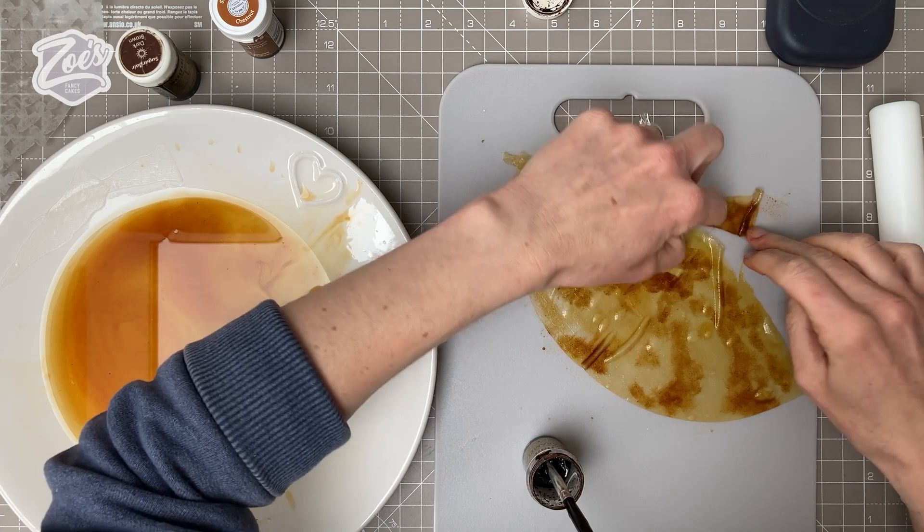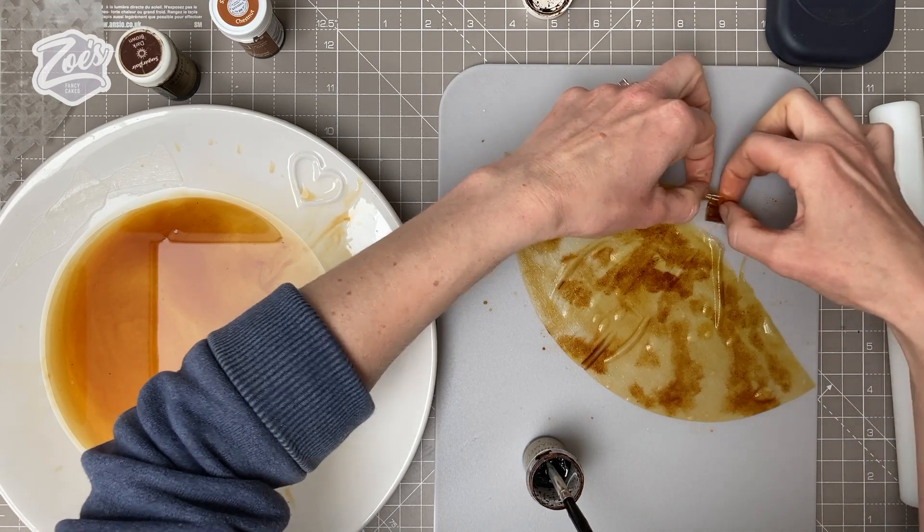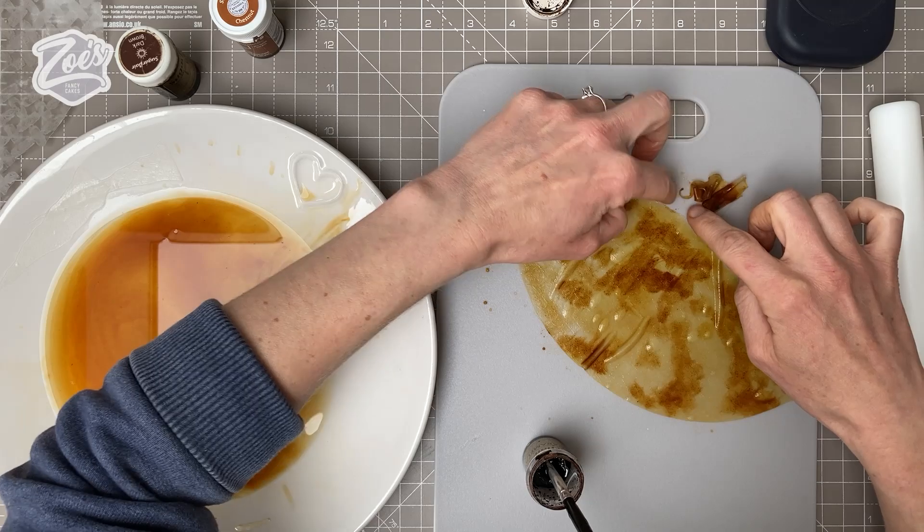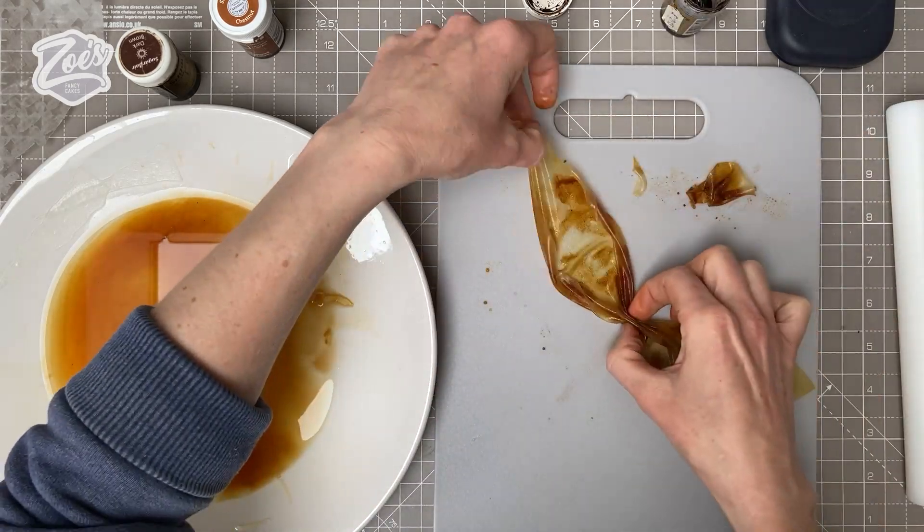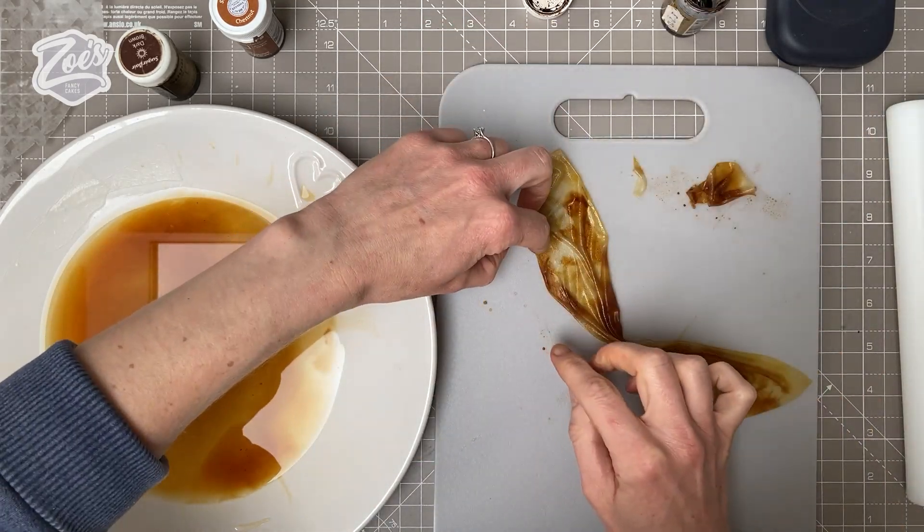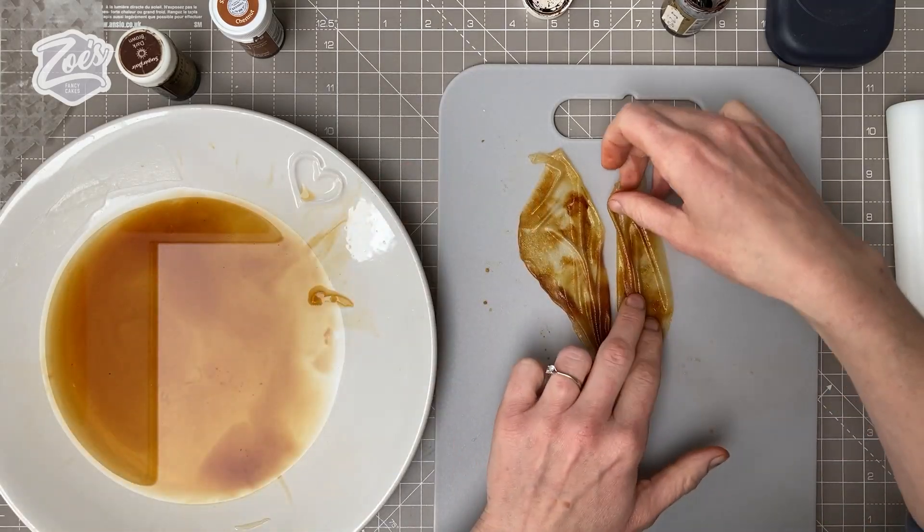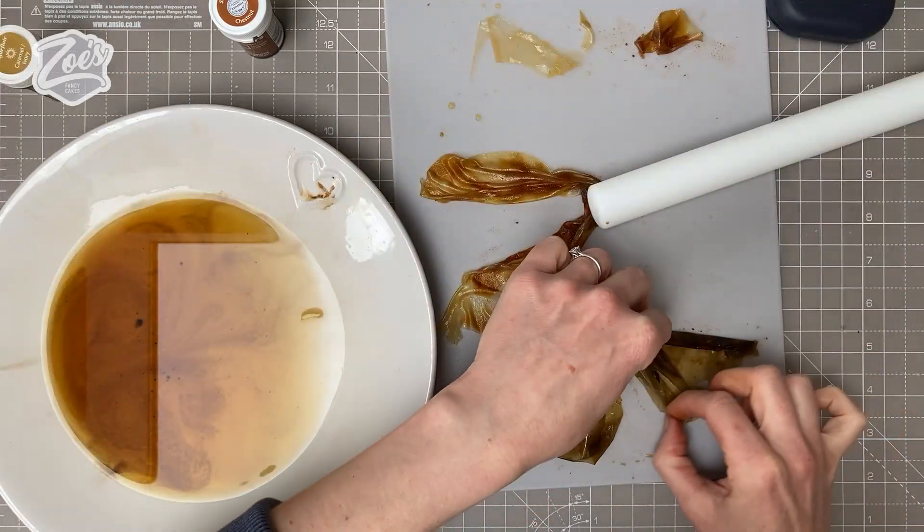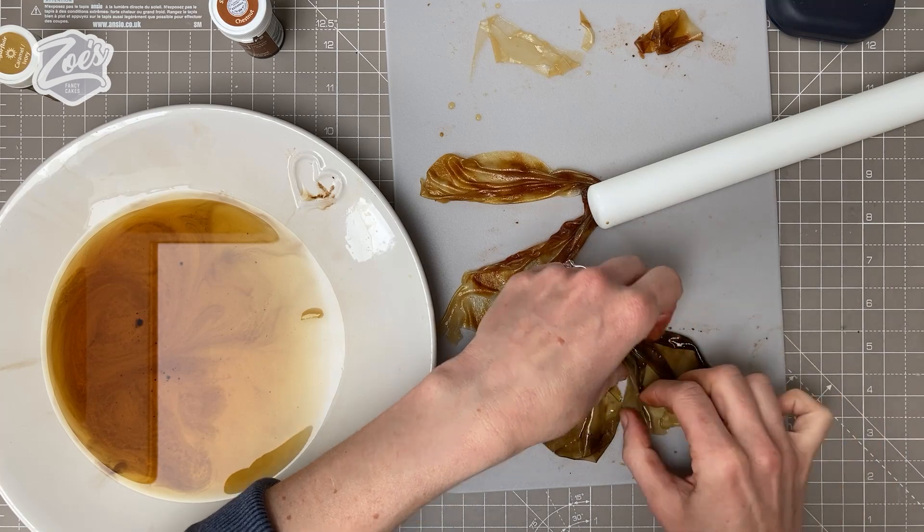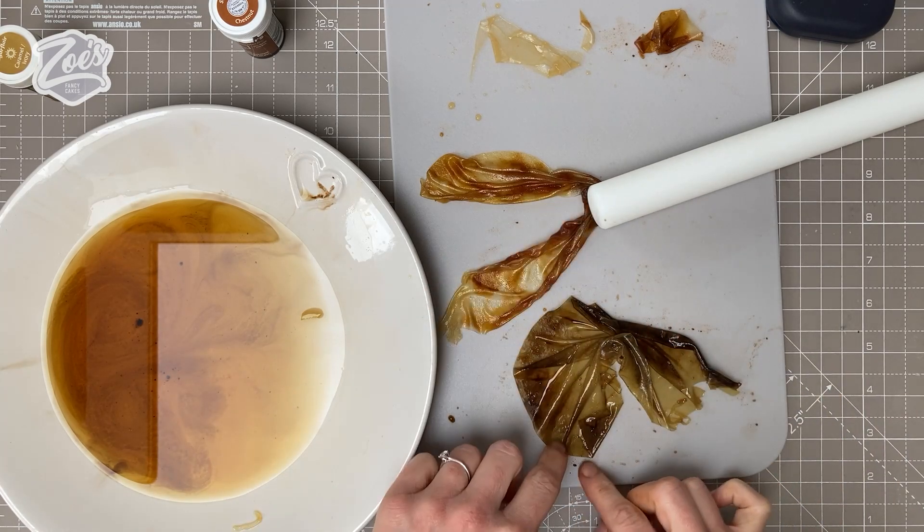Pull it into different shapes you think will look nice for a mermaid tail. It might change shape slightly when it's drying as well. You can use a few different pieces to create different shapes, and then you've got a few to choose from. The wetter it gets, the harder this stuff is to pull apart.